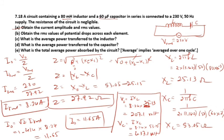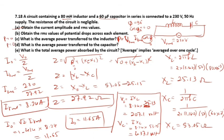The average power transferred to the inductor is 0, and to the capacitor is also 0. This is because P = V_RMS × I_RMS × cos(φ), and in both inductor and capacitor the phase difference is 90°, so cos(90°) = 0. Therefore the total power in the circuit is also 0.